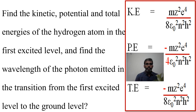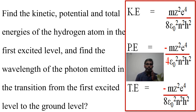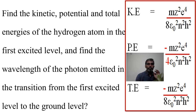Next question: find the kinetic energy, potential energy, and total energy of the hydrogen atom in the first excited level, and find the wavelength of the photon emitted in the transition from the first excited level to the ground level. You can use: KE = mZ²e⁴ / (8ε₀²n²h²) (positive); PE = −mZ²e⁴ / (4ε₀²n²h²) (negative, attractive potential); total energy = −mZ²e⁴ / (8ε₀²n²h²) (negative, indicating stability). Use these expressions to solve the question.